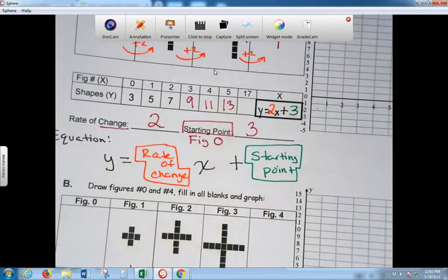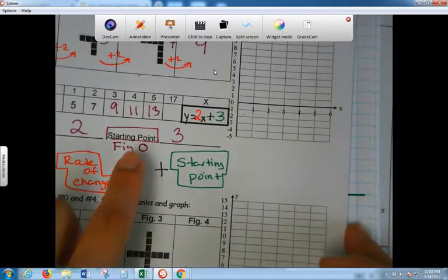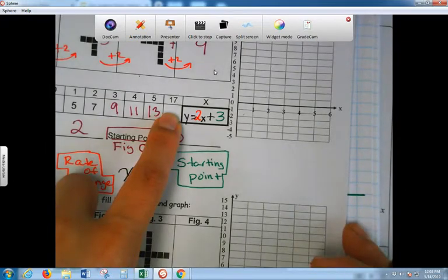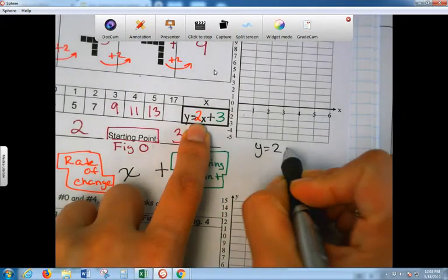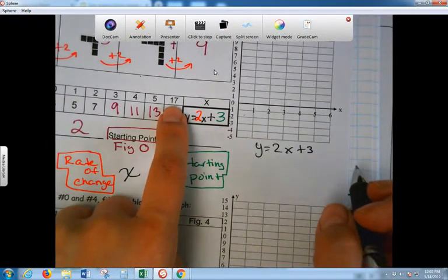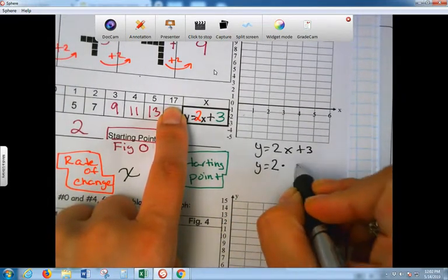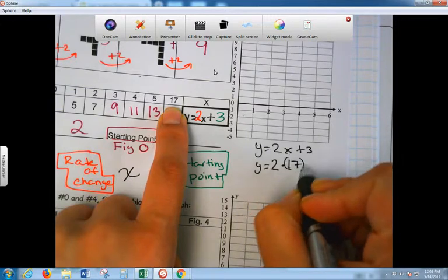Why? Because this is our formula. Y equals rate of change X plus starting point. So rate of change, 2, done. Starting point, 3, done. So you just write it out. That's it. So easy. I know. So here, 17, we're going to use your equation. Y equals 2X plus 3. But instead of writing X, we're going to write 17. So Y equals 2 times 17 plus 3.